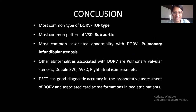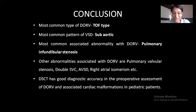Conclusion: The most common type of DORV is the TOF type, the most common pattern of VSD is the sub-aortic type, and the most commonly associated abnormality is pulmonary infundibular stenosis. Other abnormalities associated with DORV include pulmonary valvular stenosis, double SVC, atrioventricular septal defect, and right isomerism. We conclude that dual source CT has good diagnostic accuracy in the preoperative assessment of DORV and associated cardiac malformations in pediatric patients.